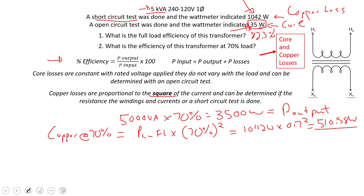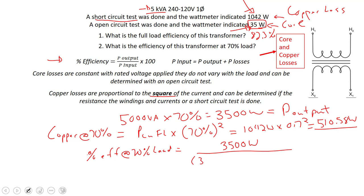Now we can put this into our formula. The percent efficiency at 70% load equals 3500 watts divided by (3500 plus 510 plus 35), times 100. That comes to roughly 86.5%. So at 70% load, this transformer is actually more efficient than at full load.